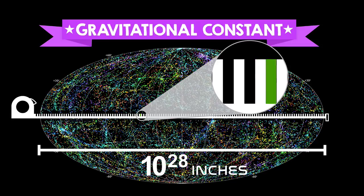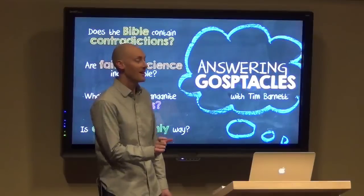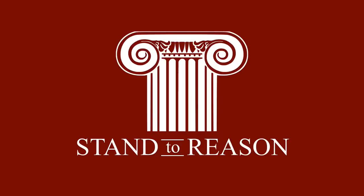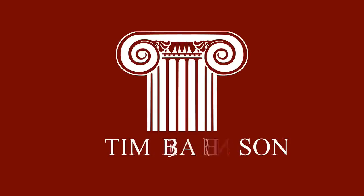If you take it the other way and make the gravitational constant a little bit weaker — just move one inch the other direction — then the universe blows apart and you never get galaxies and stars and planets.